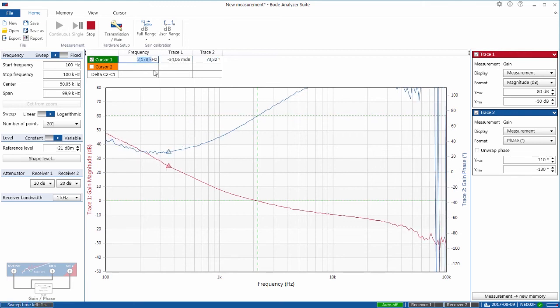but the loop bandwidth has dropped from 10, 11 kilohertz to around 2 kilohertz and that explains in frequency domain why we saw such a slow response in discontinuous conduction mode on the voltage mode buck converter.